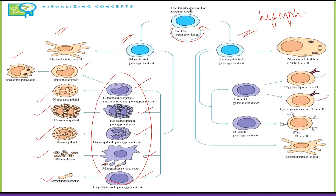Next, we have the lymphoid progenitor. The lymphoid progenitor can produce natural killer cells or dendritic cells. It also forms T cell progenitors and B cell progenitors. The T cell progenitor has two fates: one is a helper cell and one is a cytotoxic cell. The B cell progenitor forms B cells.